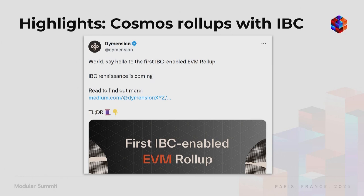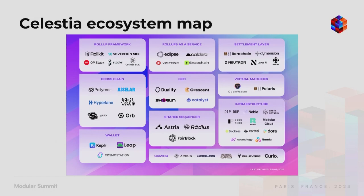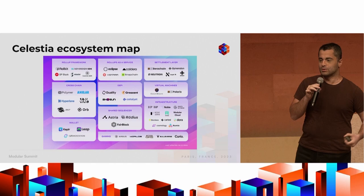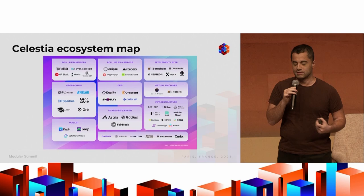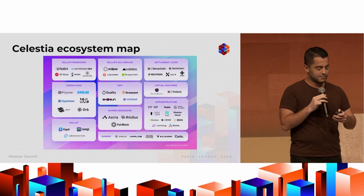There are many more highlights that I can't list all in this talk. Celestia has a rapidly expanding ecosystem including various applications — including gaming providers and gaming chains. Curio did an interesting demo recently where they ran a real-time strategy game on a modified EVM roll-up on Celestia. There are many other interesting pieces of infrastructure and applications on the stack as well.